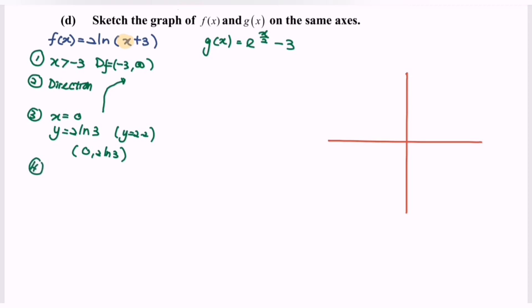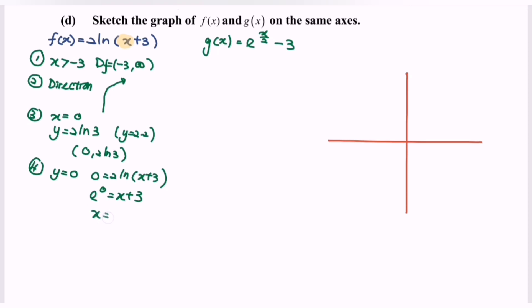Step four: find the x-intercept. Set y = 0, so 0 = 2ln(x+3). Rearranging: 0/2 = 0, e^0 = x+3. Since e^0 = 1, we get x = -2. So the x-intercept is the point (-2, 0).